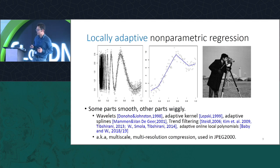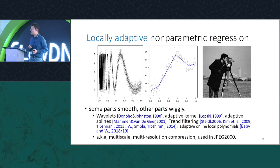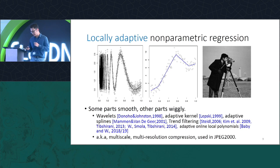This family is harder than cases when functions are homogeneously smooth. On the right-hand side I give an example in 2D with an image: the sky and the jacket are smooth, but at the boundary between the foreground and background there are sharp edges. Those sharp edges make the problem harder and are not captured well by nonparametric regression with homogenous smoothness assumptions.